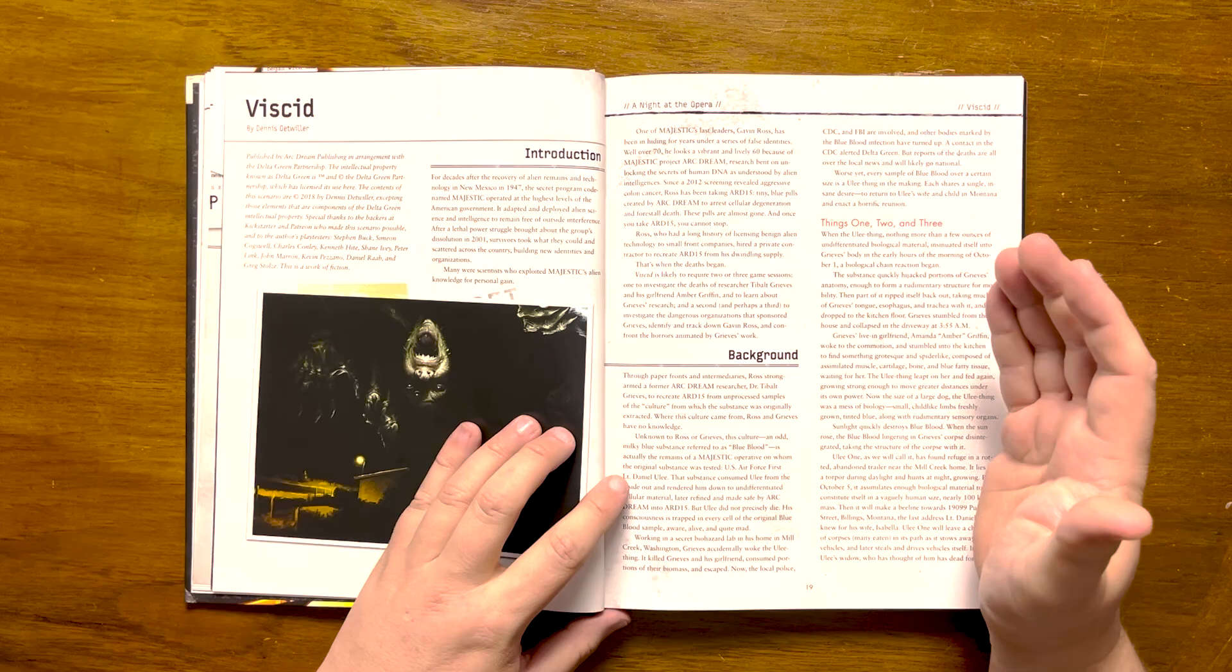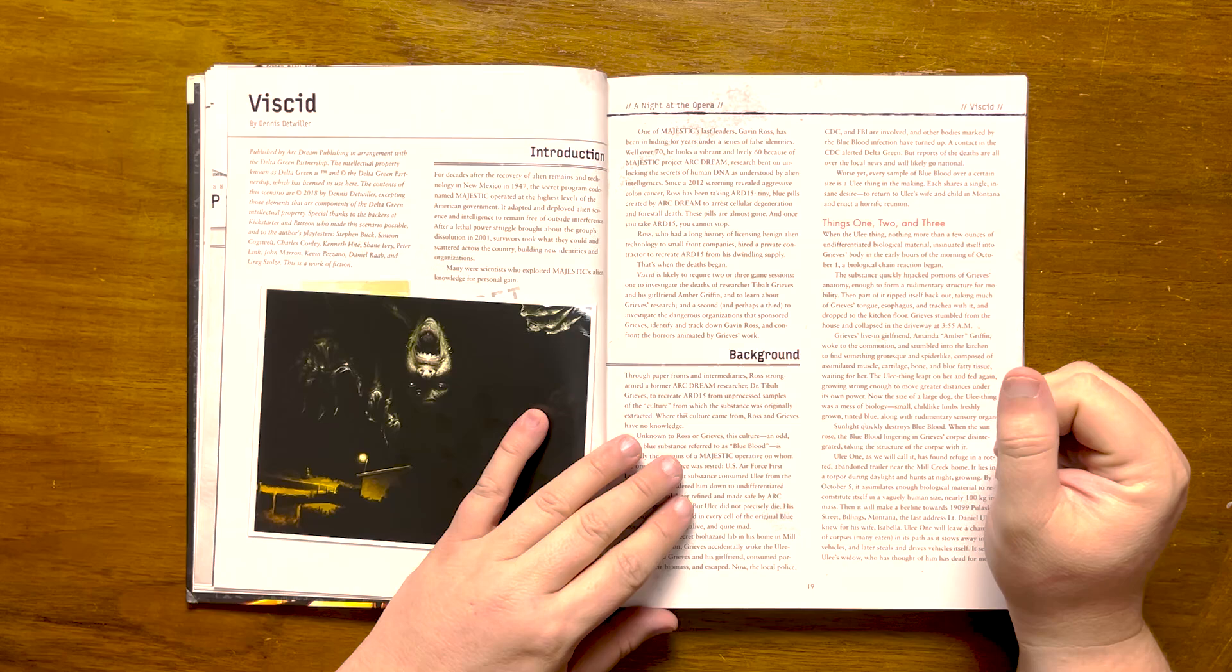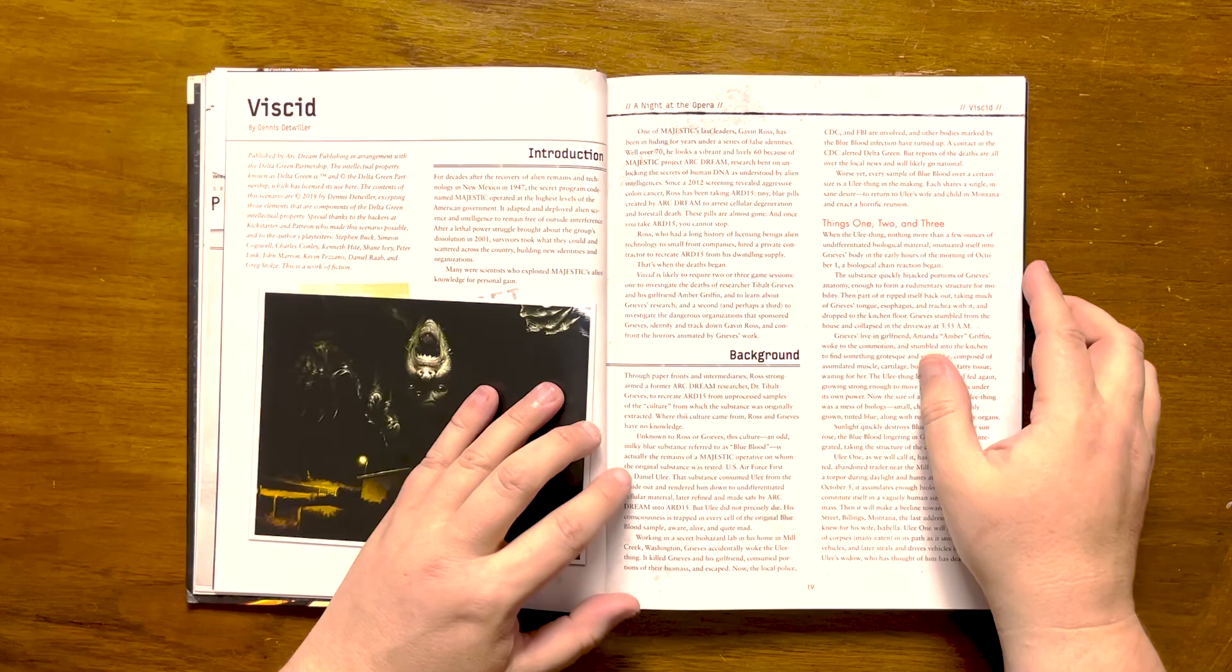The local police and CDC are now involved, and other bodies infected with blue blood have turned up, alerting Delta Green. To complicate matters further, every sample of blue blood thinks that it is the one true Uli, and has one desire: to return to Uli's wife and child in Montana and enact a horrific reunion.